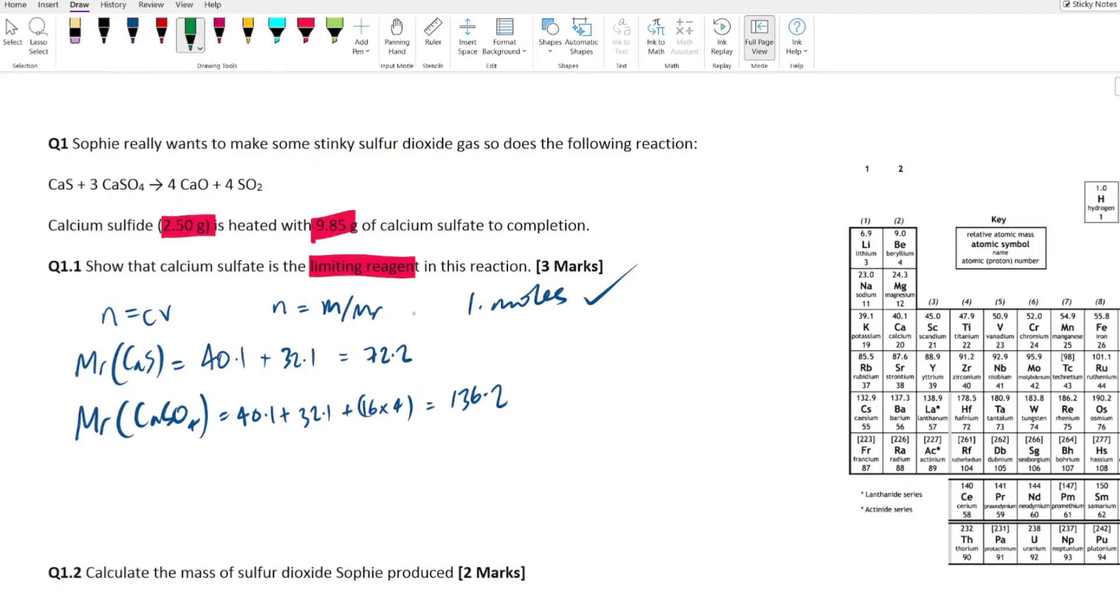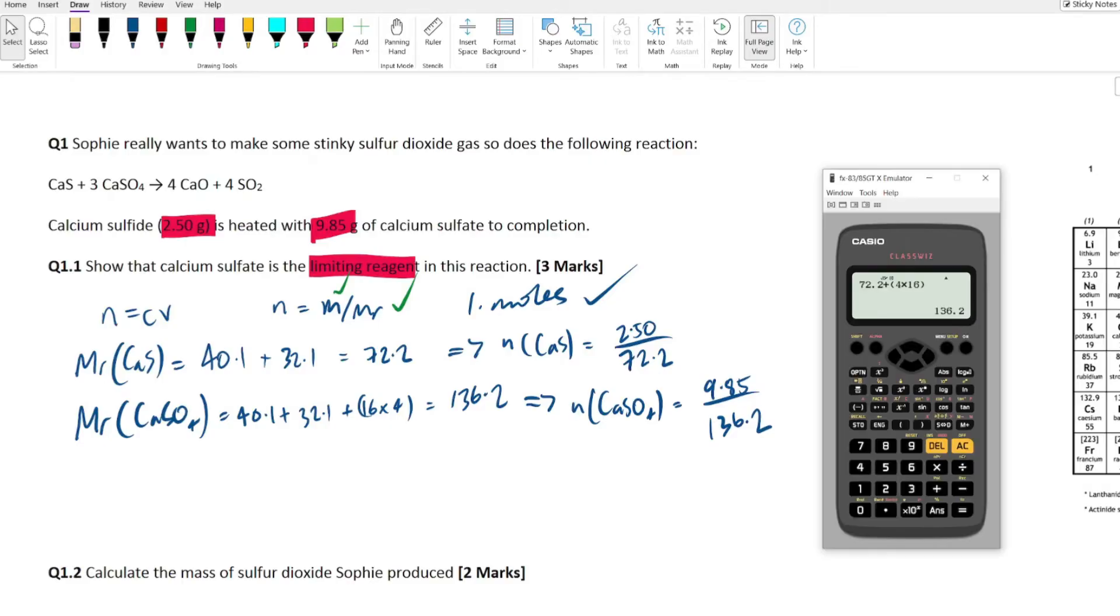All right, so what you're going to do is you're going to put that in your calculator or you can just do it in your head right here. So if you do it in your head that's going to be 72.2 right there. Let's do this one in the calculator. So we've got our 72.2 plus four times 16. Again, you could have done this in your head. Let's just make sure we got it right, 136.2.